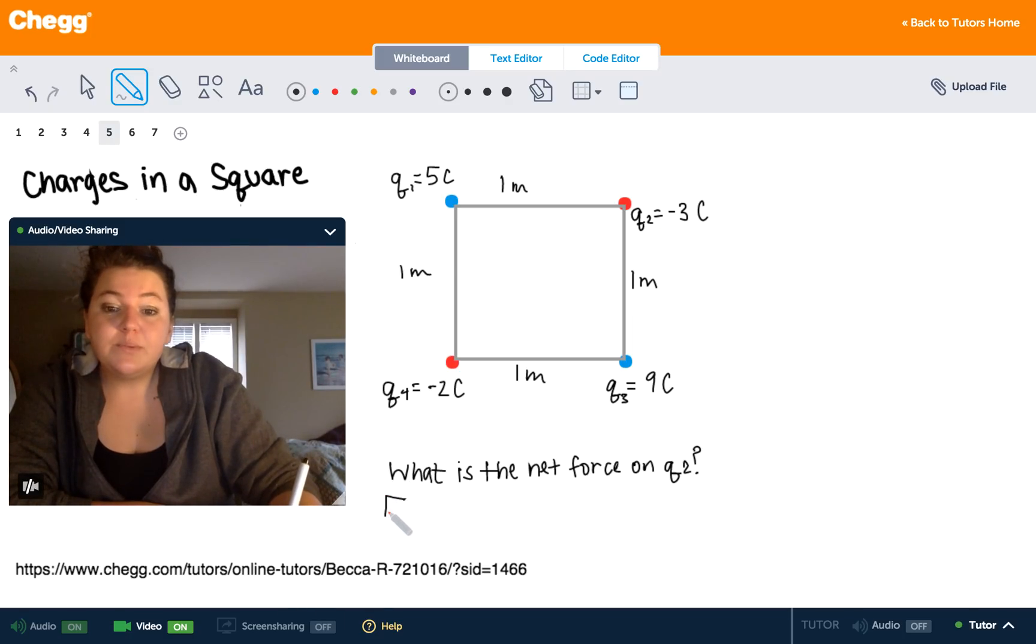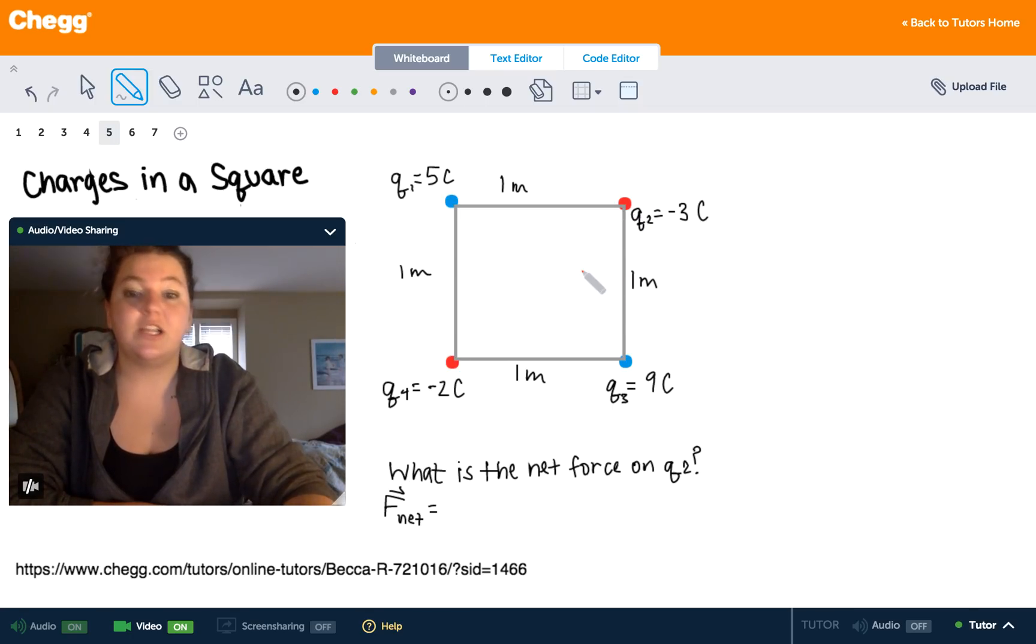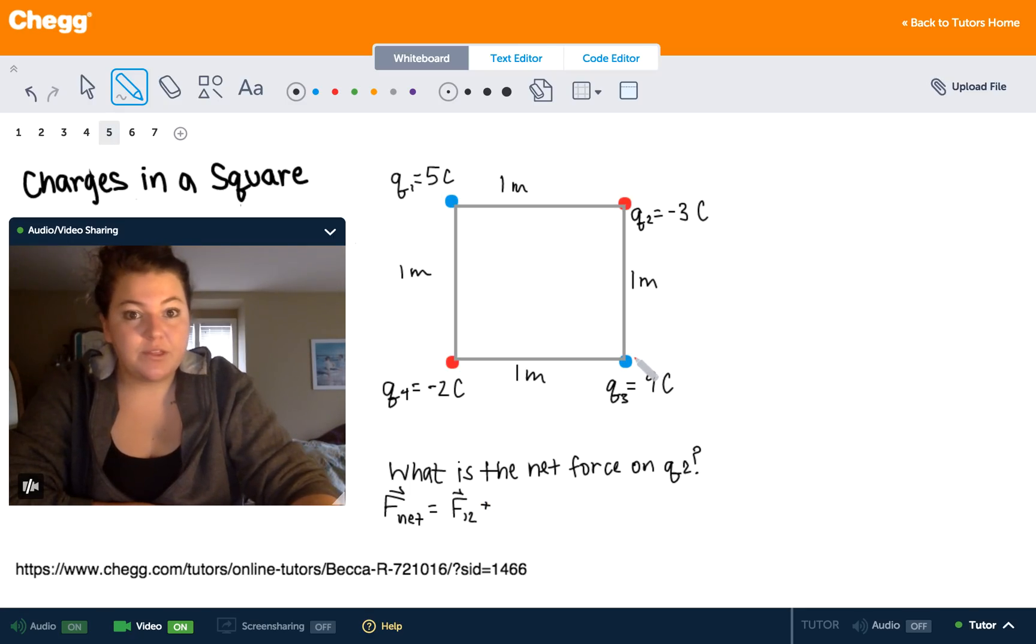So for this we're going to use what we call the law of superposition. And all that means is that your net force vector is going to be equal to the sum of all the different forces acting on that charge. And in this case we have three different external forces acting on this Q2 charge. First of all we have a force from the first charge on the second charge and we can call that vector F₁₂. We also have a force from the third charge acting on the second charge and we can call that vector F₃₂. And finally we have a force from the fourth charge acting on the second charge. So we can call that force vector F₄₂.